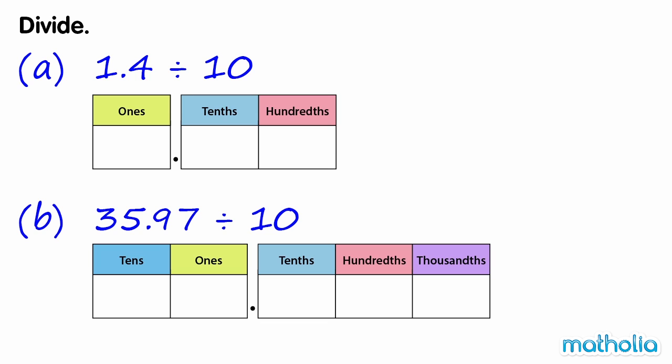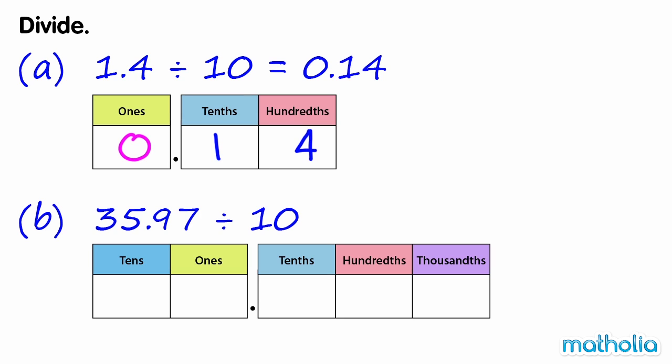Divide. A. 1.4 divide 10. Write 1.4 in a place value chart. We can divide by 10 by shifting the digits one place to the right. 1.4 divide 10 equals 0.14.